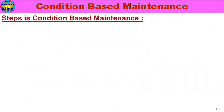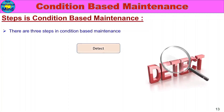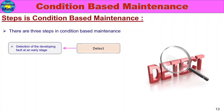Now let's look at the steps in Condition Based Maintenance. There are three steps. The first step is Detect — detection of a developing fault at an early stage by regularly monitoring the machine condition.